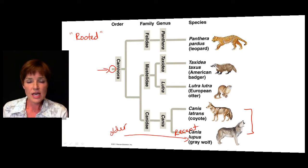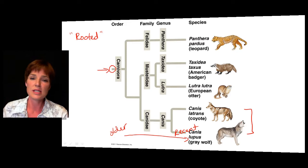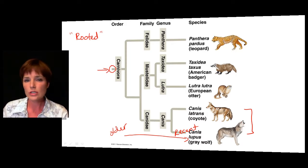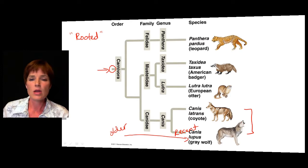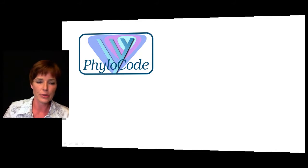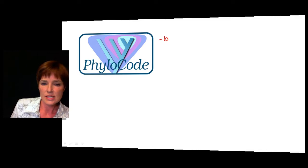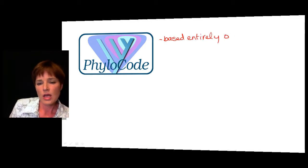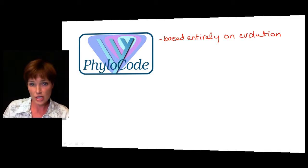One problem with Linnaeus's classification system is that he based it on looks, and sometimes looks don't correspond to evolutionary history. So it is very possible that you have a phylogenetic tree which doesn't truly reflect the evolutionary history of an organism. When that happens, some rearranging has to take place — but we don't change the binomial nomenclature that we've given to an organism. Because of this, many scientists have decided to lean towards what's called a PhyloCode, which would be based entirely on evolutionary history, eliminating cases where things appear close on trees just because they look alike.